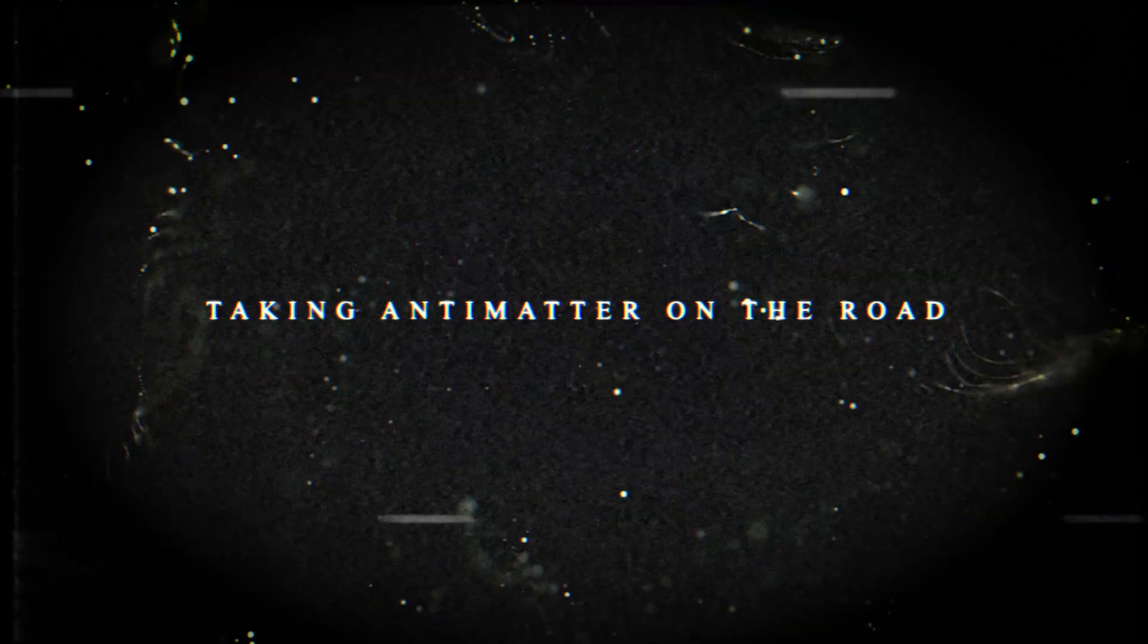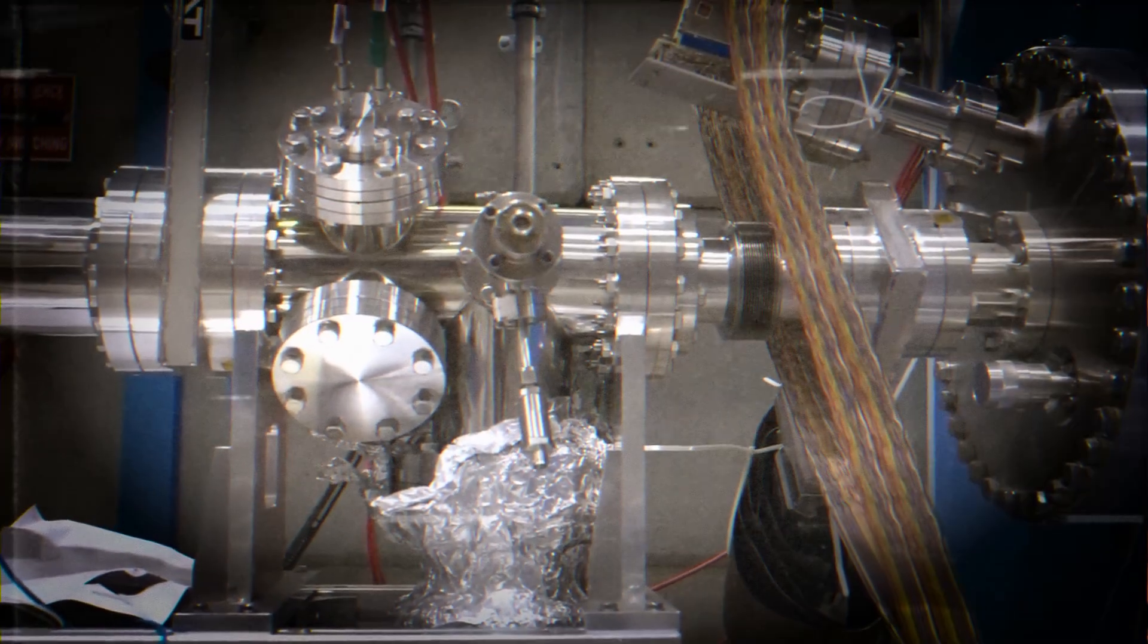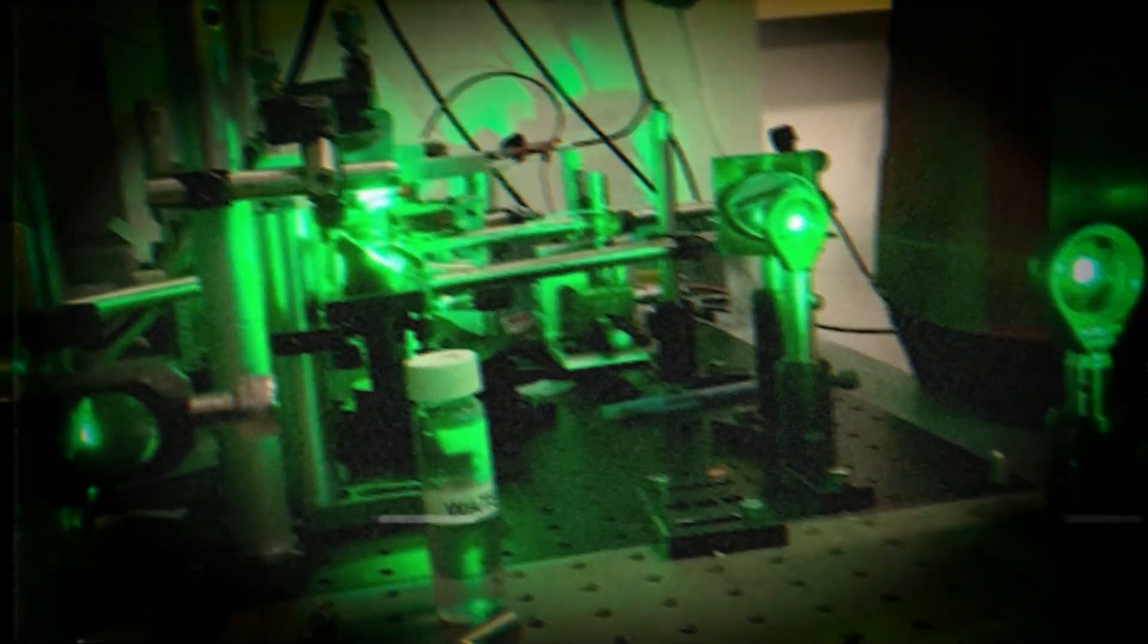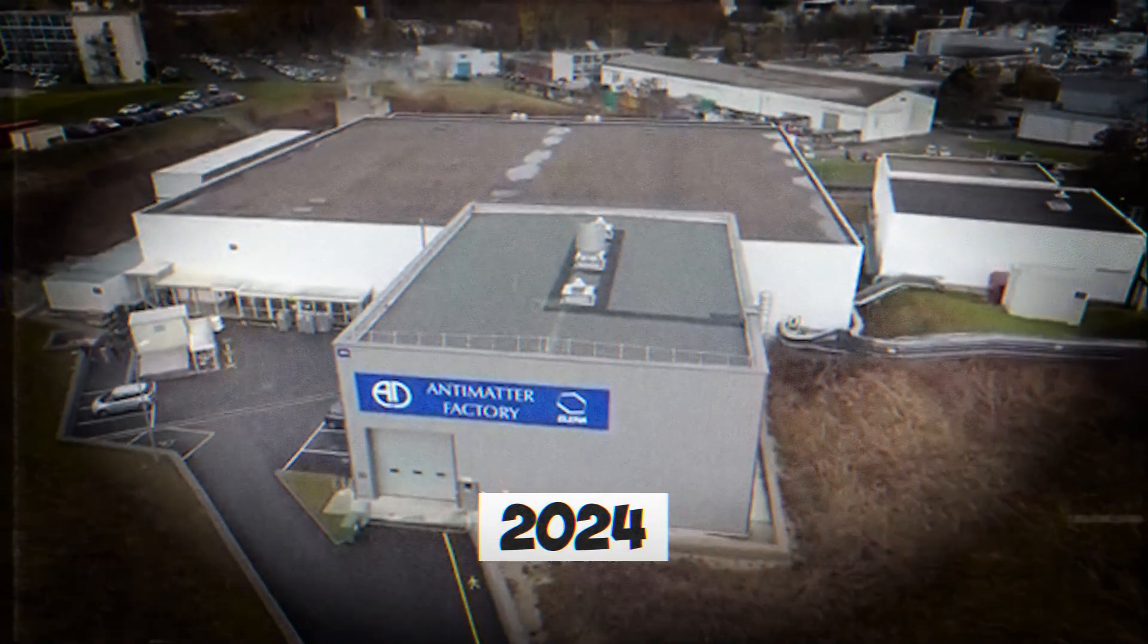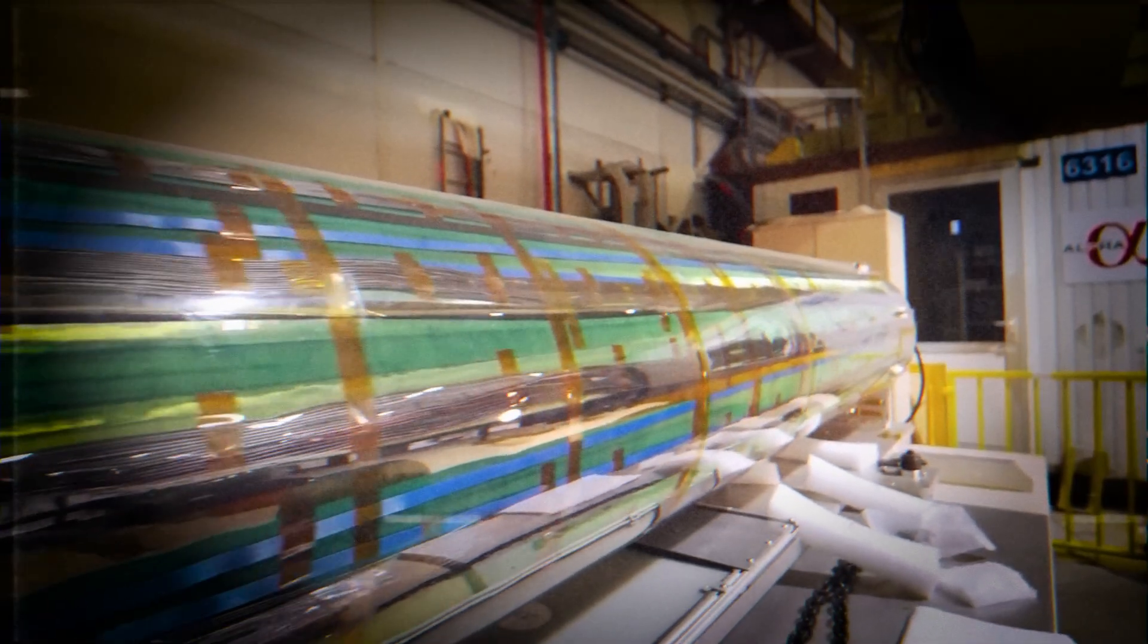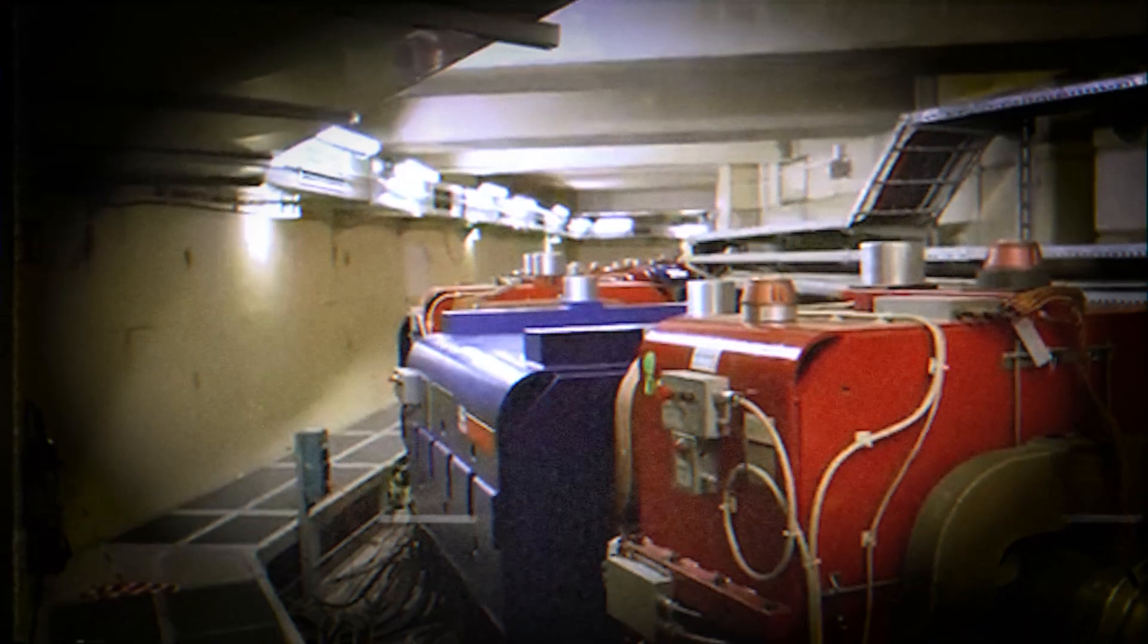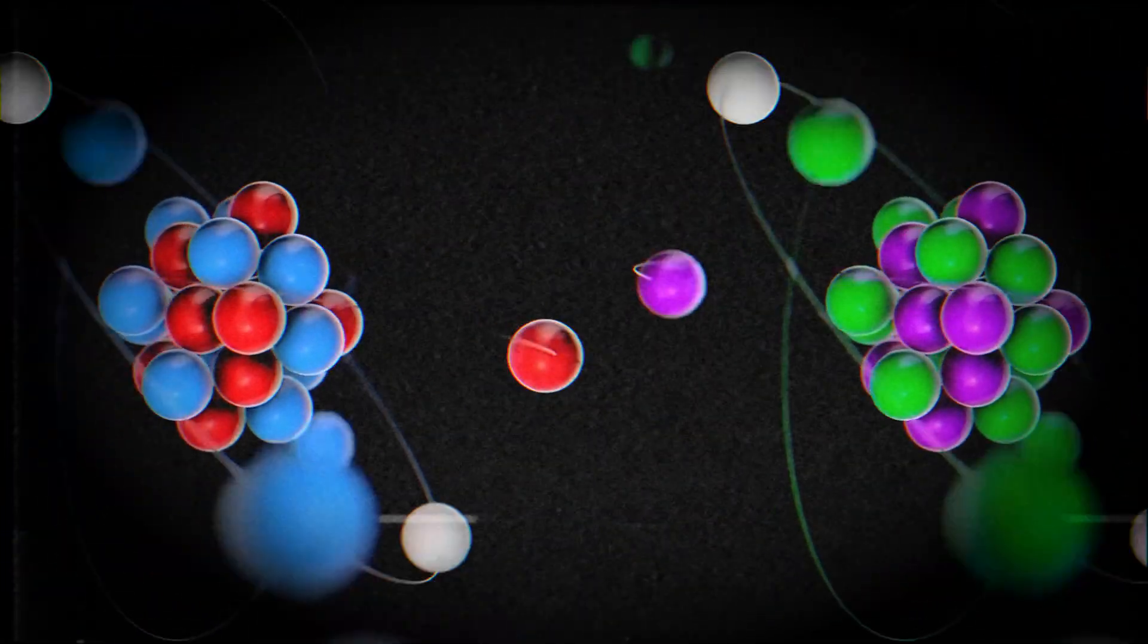Taking antimatter on the road. As if wrangling antimatter inside a lab weren't already difficult enough, CERN has been quietly testing something that sounds even more impossible. Moving antimatter around like cargo. It's one thing to trap it in magnetic bottles deep underground, where every variable is carefully controlled. It's another thing entirely to pack it up and take it for a spin outside the world's most sophisticated physics lab. In late 2024, the Base Collaboration, the team responsible for some of the most precise antimatter measurements ever made, unveiled a new kind of technology, a portable particle trap. Think of it as a high-tech suitcase designed to hold particles for hours, maybe even days, without letting them escape or decay. For the first trial, the scientists kept things safe by using ordinary protons as test passengers. After all, you don't start your first road trip with a trunk full of antimatter.